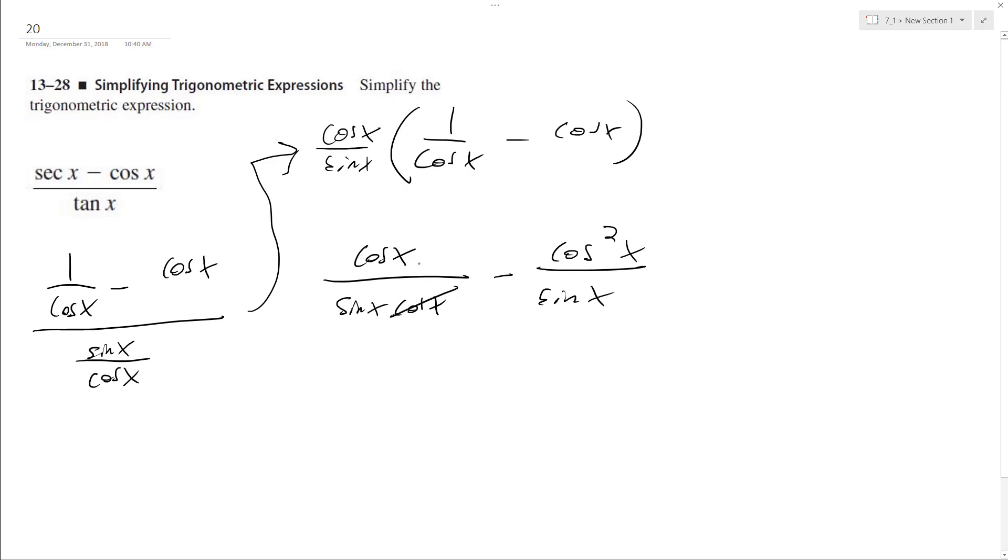So this cosine cancels out this one, and we end up with 1 over sine x minus cosine squared x over sine x.